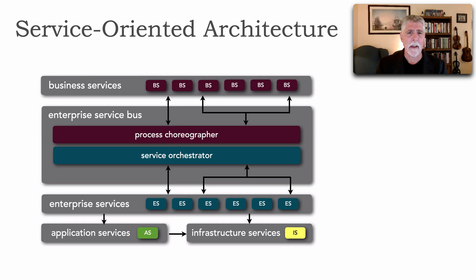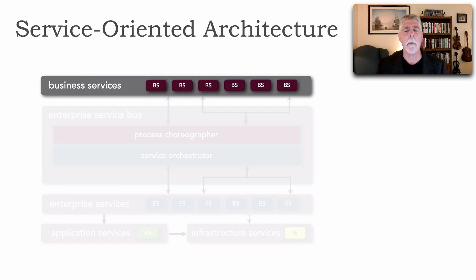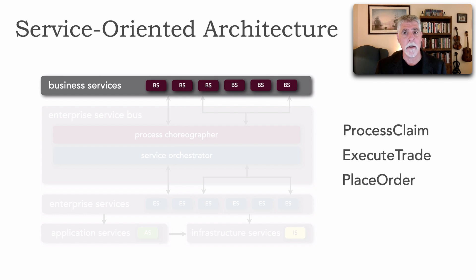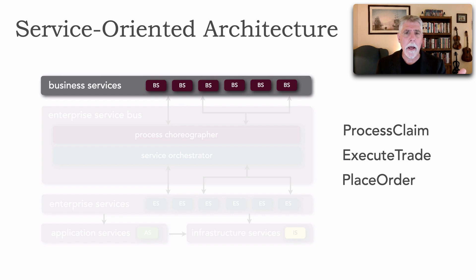There's a very strict taxonomy of service types that exist with SOA, and it all starts with what are called business services. These are coarse-grained abstract services that business users and owners defined — things like processing a claim, executing a trade, placing an order. These were things that business users said this is what I need to do, hence it became a business service. These included a name with a contract for inputs and outputs, and those were specified by business users.